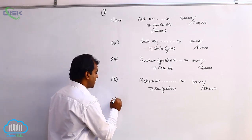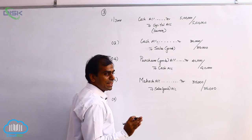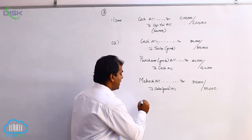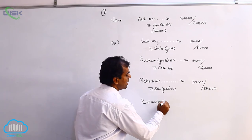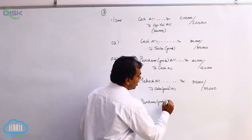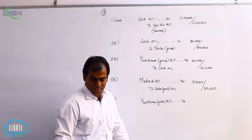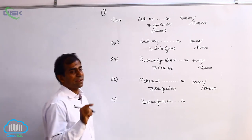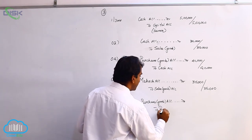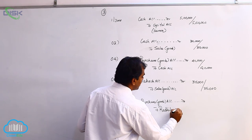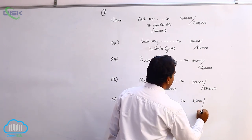The next transaction is on the 9th: bought goods from Radhika. Bought goods means purchase of goods. Purchases represent goods coming in — real account, debit what comes in — so we debit purchases account. We are buying from Radhika; Radhika is a personal account — credit the giver. So we credit Radhika. The journal entry is purchases account debit to Radhika account, 25,000.